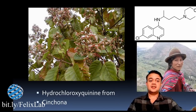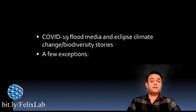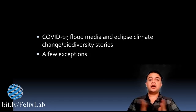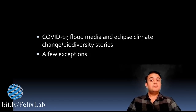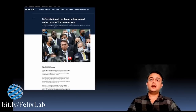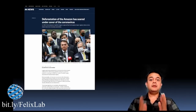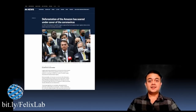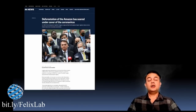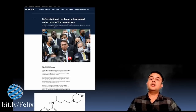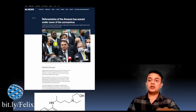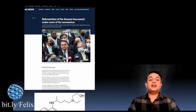If you switch on your TV or open a newspaper, you will see lots of COVID-19 stories. In one sense, COVID-19 is flooding the media and eclipsing climate change and biodiversity stories. There are a few exceptions — CNBC recently reported that deforestation of the Amazon has skyrocketed under the cover of the coronavirus. Not many people are discussing this environmental crisis even though it is directly happening in the Amazonian rainforest — the same forest that gave us the COVID-19 treatment through quinine. It is a very ironical situation.